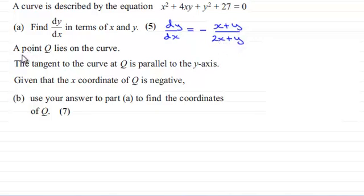Now we're told that a point Q lies on the curve and the tangent to the curve at Q is parallel to the y-axis. Given that the x-coordinate of Q is negative, in part B now we've got to use the answer to part A to find the coordinates of Q for seven marks.